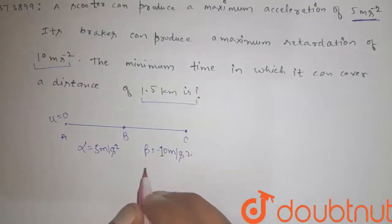So guys, the scenario is like this. This is point A, this is point B, let here is point C. Start from rest. Let it can produce maximum acceleration, that is alpha = 5 meter per second square. The retardation is minus 10 meter per second square. Here is V max.